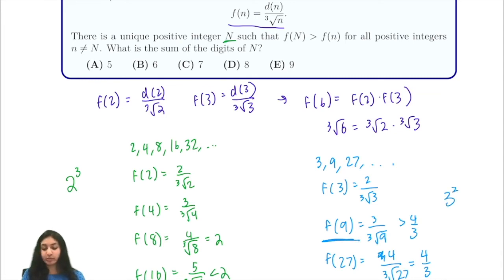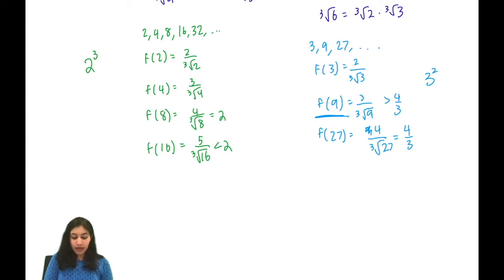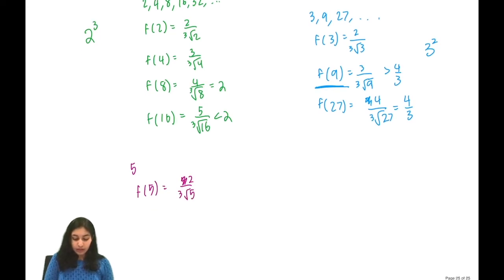So that tells us that f(9) is the largest value we have, so we want a power of 3 squared for our prime 3. Now we continue with our next prime 5. In the case of 5, f(5) is equal to 2 over the cube root of 5, f(25) is equal to 3 over the cube root of 25, so this is immediately smaller than f(5), so we only want 1 power of 5.